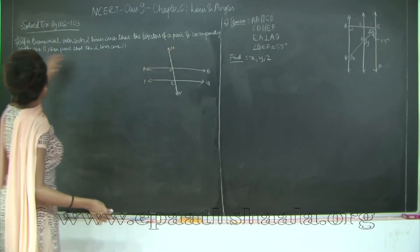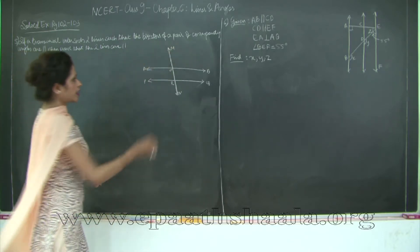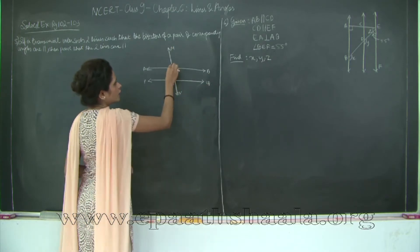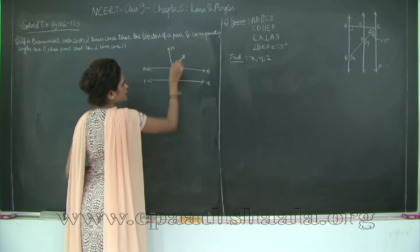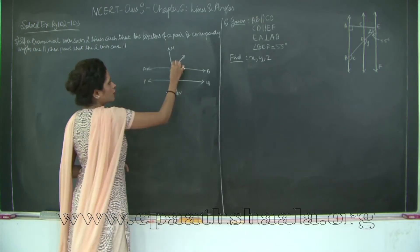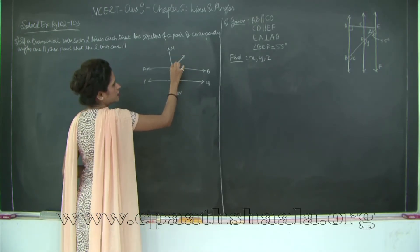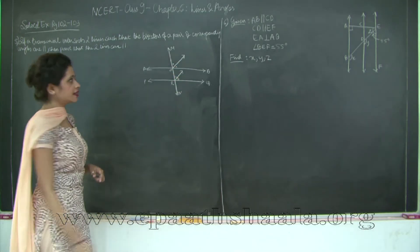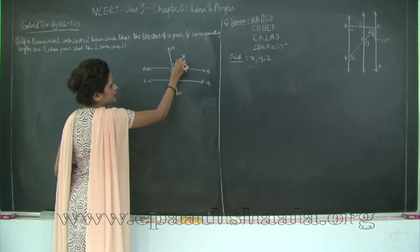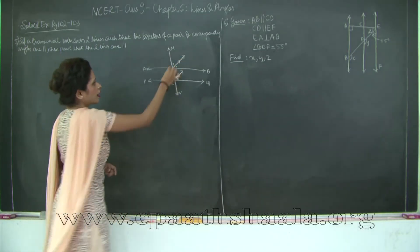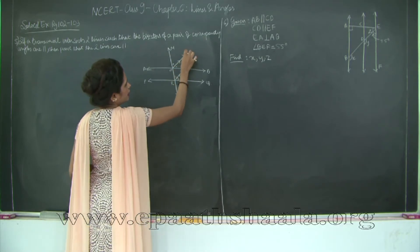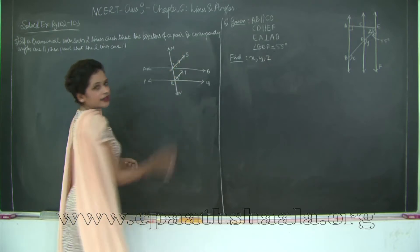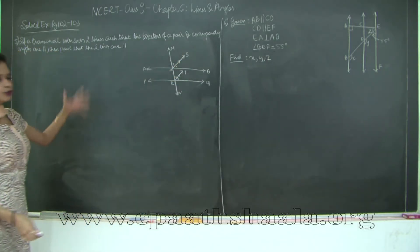The bisectors of the pair of corresponding angles are parallel. I will take two corresponding angles — that is ∠MOB and ∠ORQ — and draw the bisectors of these angles. Since these are bisectors, the half-angles are equal on each side. These bisectors are parallel. I will name them S and T, so RT is parallel to OS. Let us write the Given and To Prove.